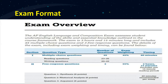Now, what is the exam overview and the exam format? It is very important to know that the exam assesses student understanding of the skills and essential knowledge outlined in the course framework. The exam consists of three questions in the free-response part and 45 to 47 multiple-choice questions. The exam is three hours and 15 minutes long. The details — including exam weighting and timing — can be found below. The weight for the MCQ is 45% and the writing is 55%.